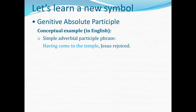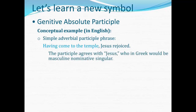I've been talking about the participle's referent. What would the referent be for the participle 'having come'? Who does the coming? Jesus does. So the participle agrees with Jesus, who in that Greek sentence would be masculine nominative singular — masculine singular intrinsically, and nominative because he's functioning as the subject of the verb. So the participle in Greek would be written in the masculine nominative singular in agreement with its referent.